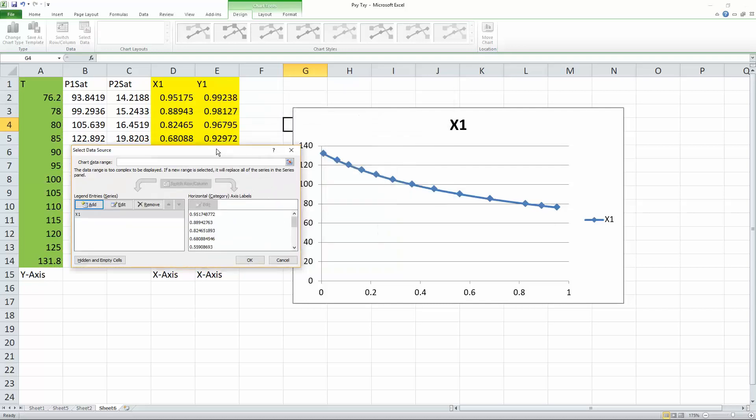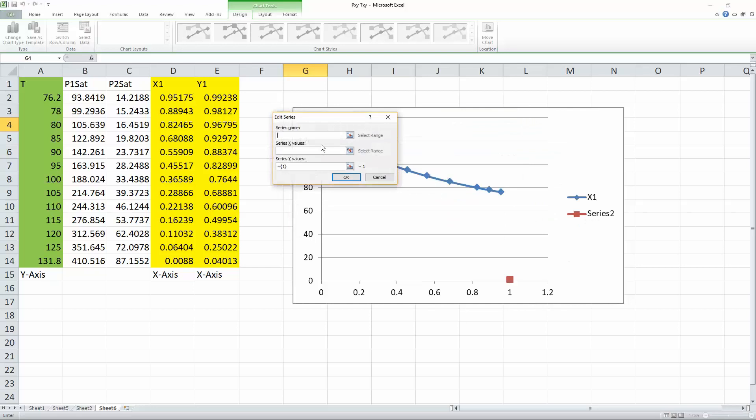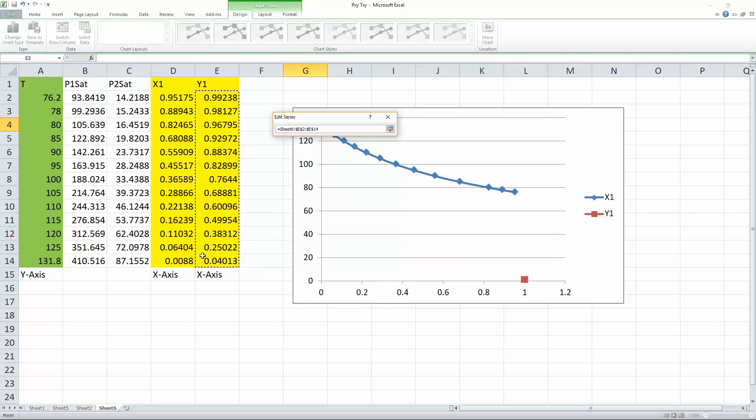So now we have the first line. Now we do the second one. So we do add, we do series name. Now we will do y1. Select x values. So x values would be these right here. Hit enter.